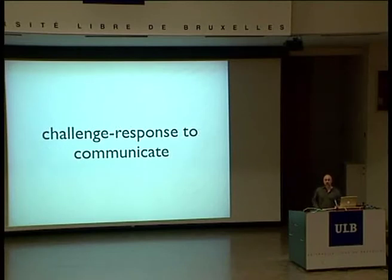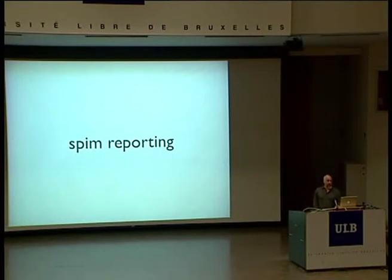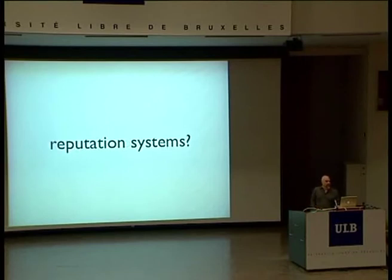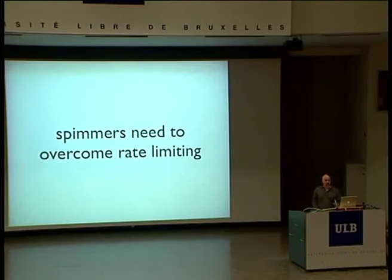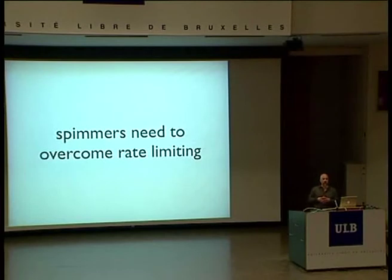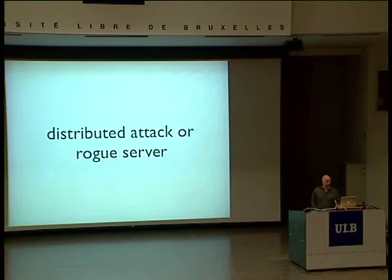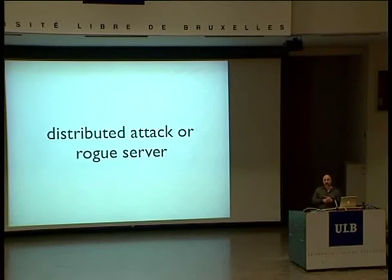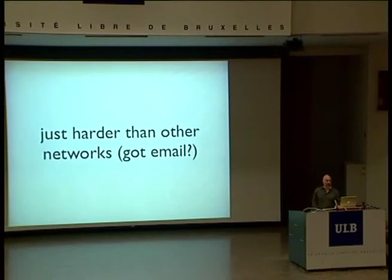For instance, we can do a challenge-response to figure out if something is a bot versus a person before you register an account. We're working on ways to report SPIM to your server, and servers can report to each other to identify rogue servers on the internet. The spammers need to overcome rate limiting. We limit the amount of packets you can send to the server to prevent rogue clients from connecting to legitimate servers. If you really wanted to attack the Jabber network, you'd either have to launch a rogue server — but you'd get discovered quickly — or launch a distributed attack, which is just harder than other networks.